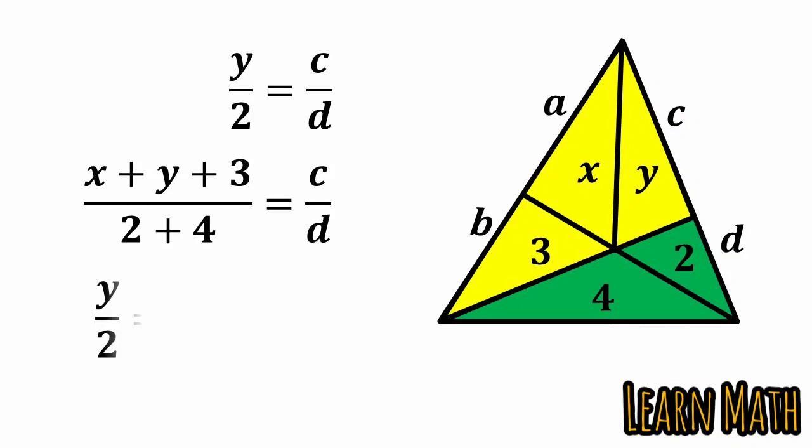Both are equal to c by d, so we can write like this. Simplify this and we will get x minus 2y is equal to minus 3. Let this be equation 2.